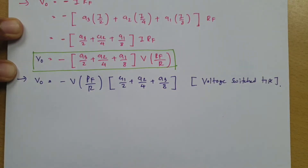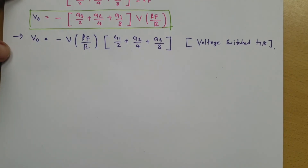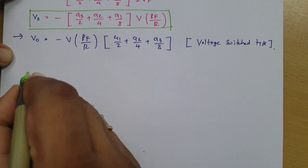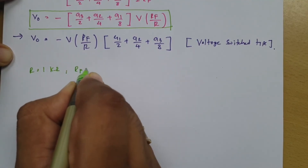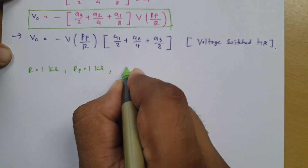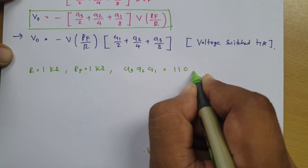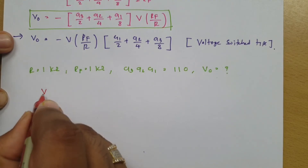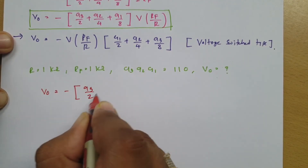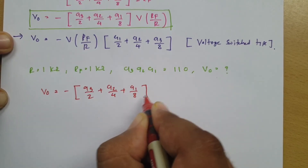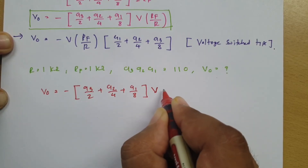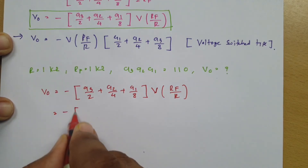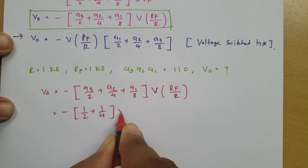Let's work through an example. Given R = 1 kΩ, RF = 1 kΩ, and the digital input A3A2A1 = 110, find V0. Using the formula V0 = −(A3/2 + A2/4 + A1/8) × V × RF/R, we substitute A3=1, A2=1, A1=0: V0 = −(1/2 + 1/4 + 0) × V × (1k/1k) = −(3/4) × V.